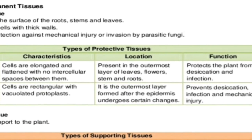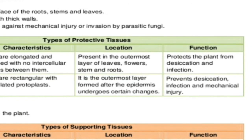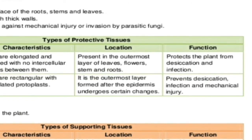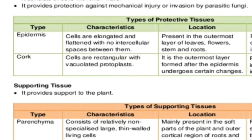Epidermal cells are elongated and flattened, and there are no intercellular spaces — they are completely continuous cells, as we cannot afford any space between them. They are present in the outermost layer of leaves, flowers, stems, and roots wherever protection is required. It protects from desiccation, meaning dehydration, and also from pathogen infections.